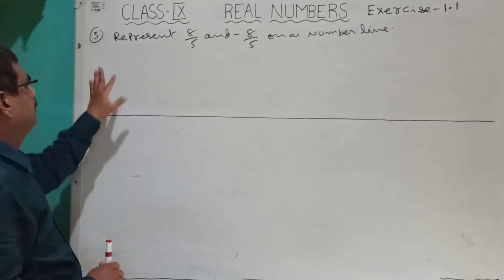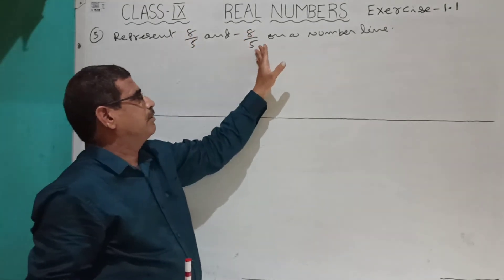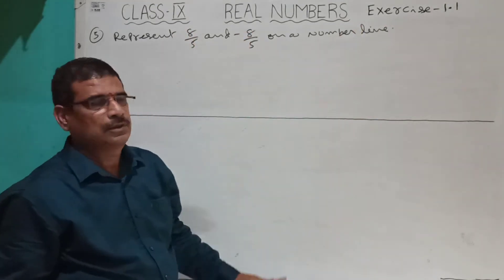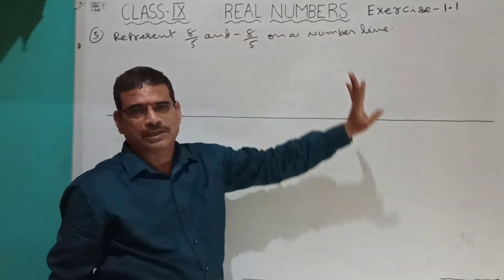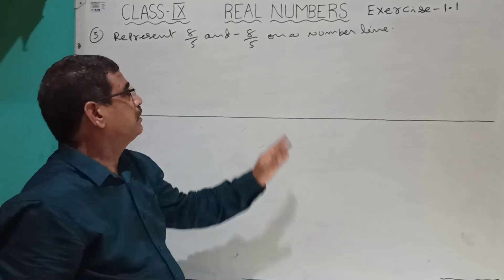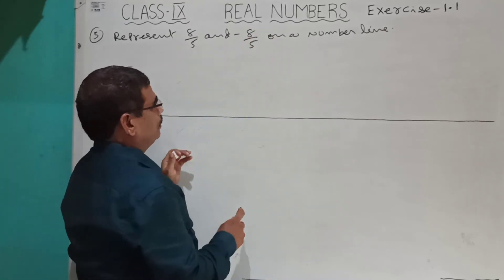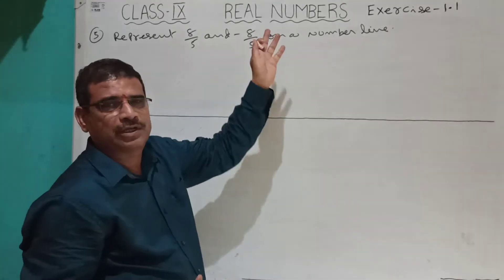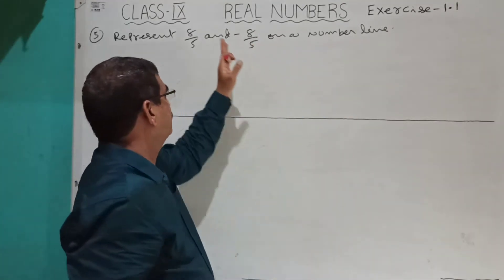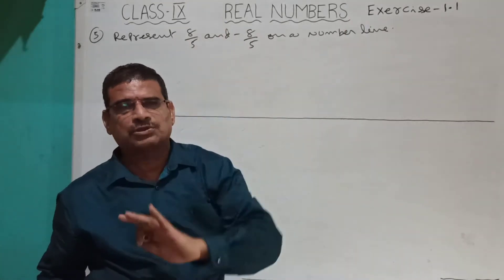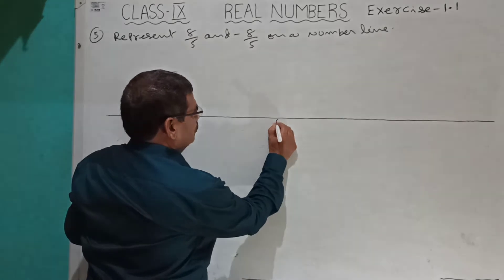Now, the 50th question in Exercise 1.1: represent 8 by 5 and minus 8 by 5 on your number line. Since there is a negative number and a positive number, in the middle put 0.